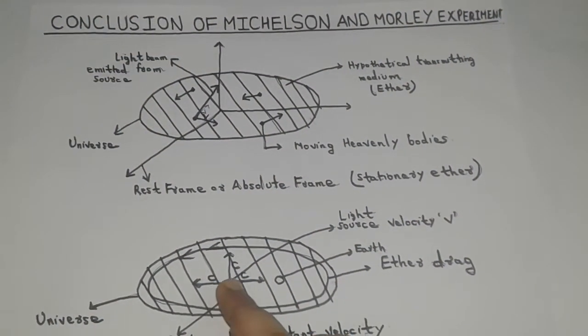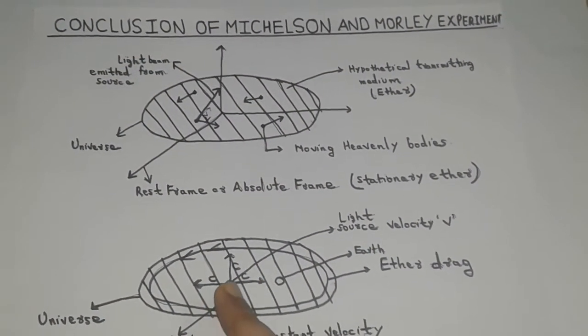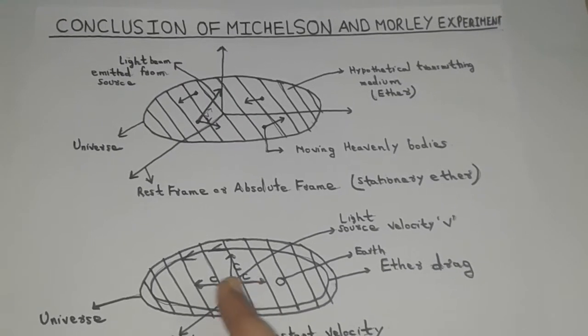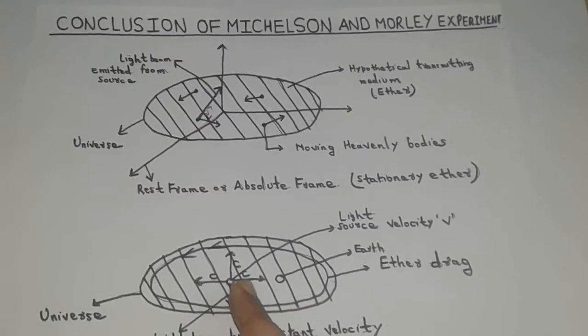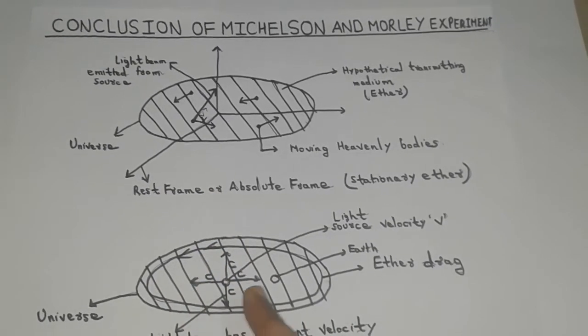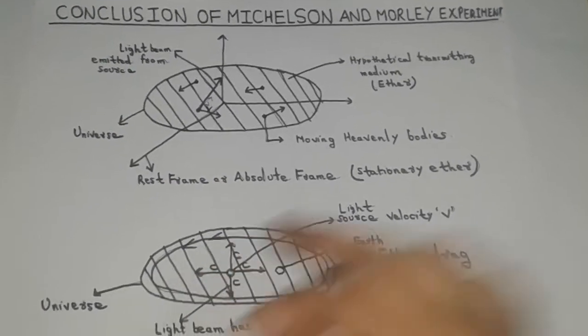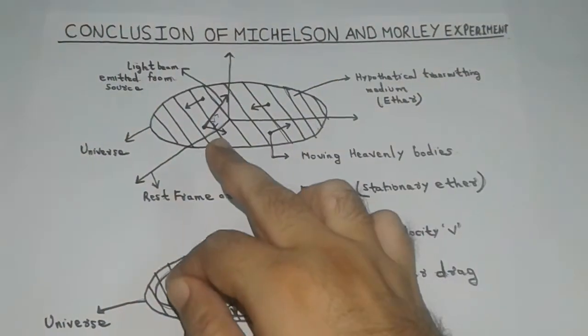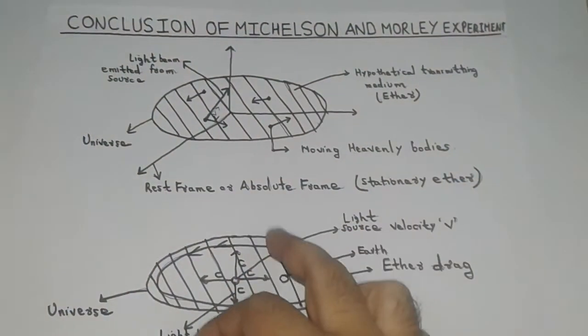As such, the velocity of light is not the vector sum of its natural velocity and the velocity of the source. Rather, it is considered as constant in all directions in space.